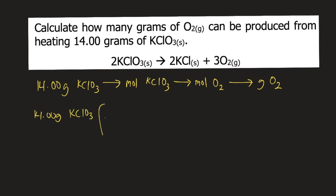To convert grams to moles, we need the molar mass. 1 mole of potassium chlorate weighs 122.55 grams of potassium chlorate. So grams of potassium chlorate will cancel, and we have moles of potassium chlorate.